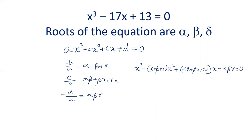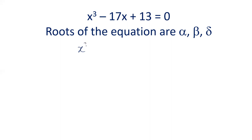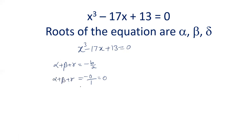Now let us see how we can find the equation whose roots are alpha plus beta, beta plus gamma, and gamma plus alpha. The given equation is x³ - 17x + 13 = 0. Alpha plus beta plus gamma equals minus b by a. Here b is 0 because there is no x² term, so alpha plus beta plus gamma equals 0.